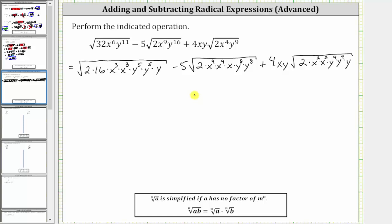Now let's circle all the perfect square factors. 16 is a perfect square, and so is x cubed times x cubed, as well as y to the fifth times y to the fifth. X to the fourth times x to the fourth is a perfect square factor, and so is y to the eighth times y to the eighth. And here, x squared times x squared is a perfect square factor, and so is y to the fourth times y to the fourth.